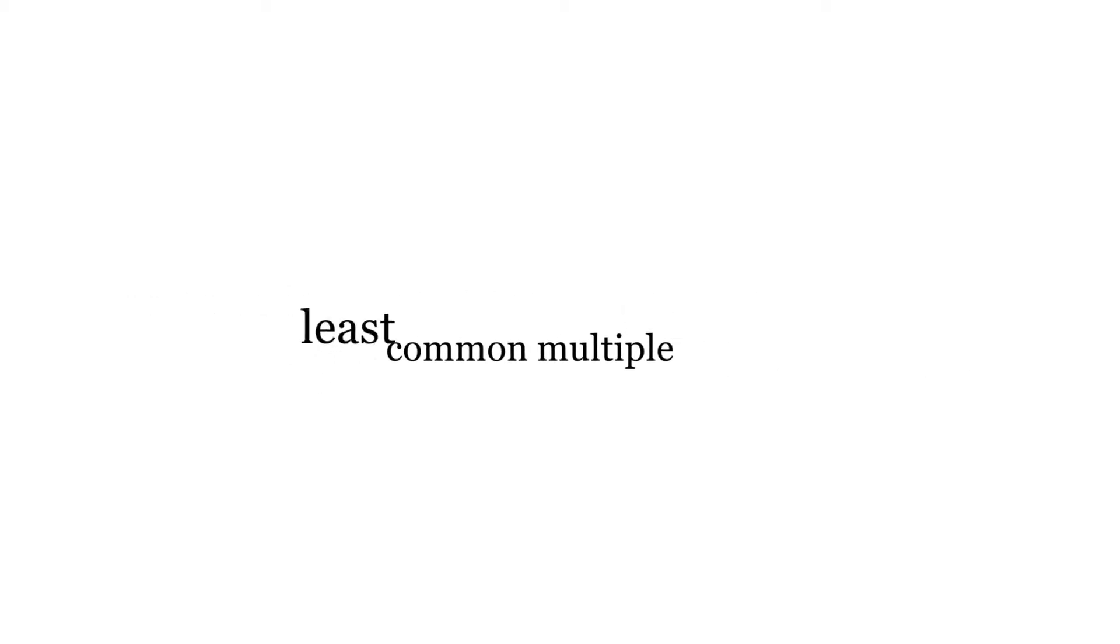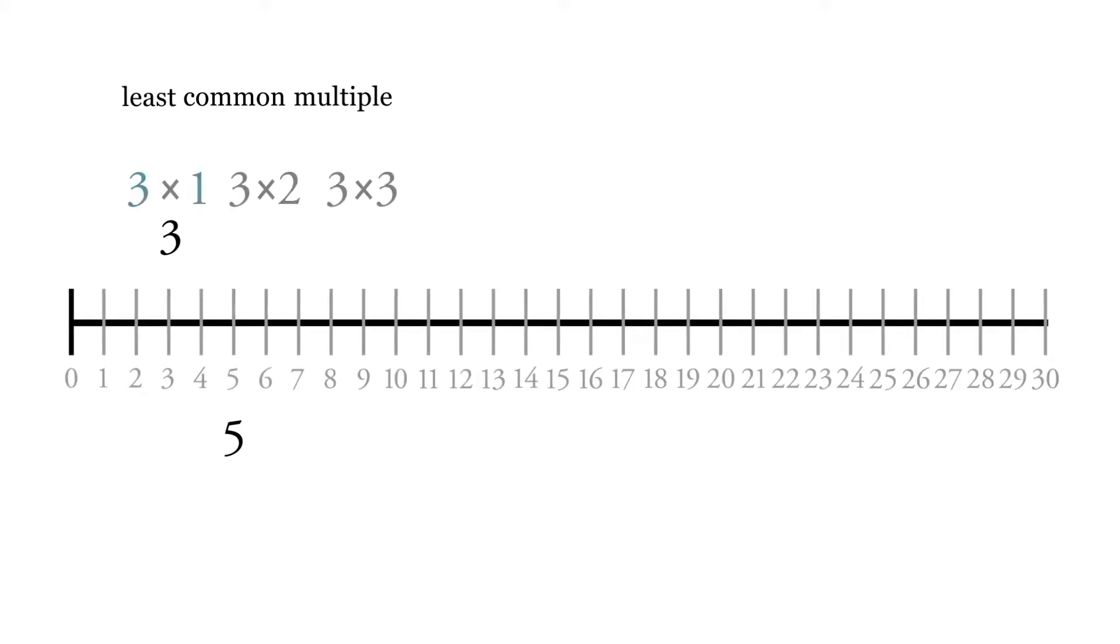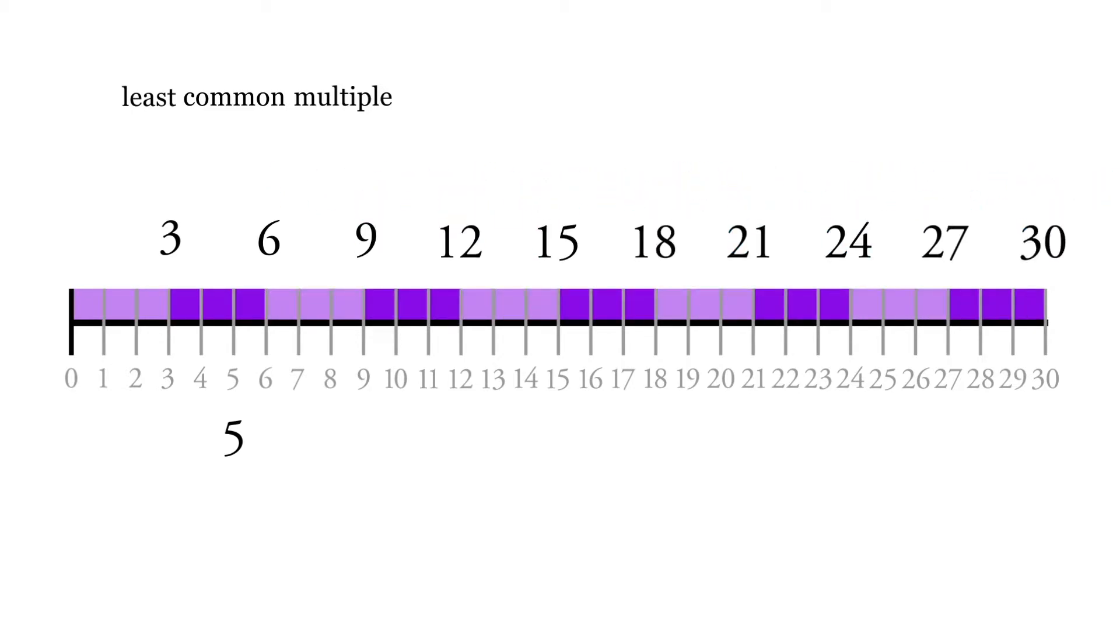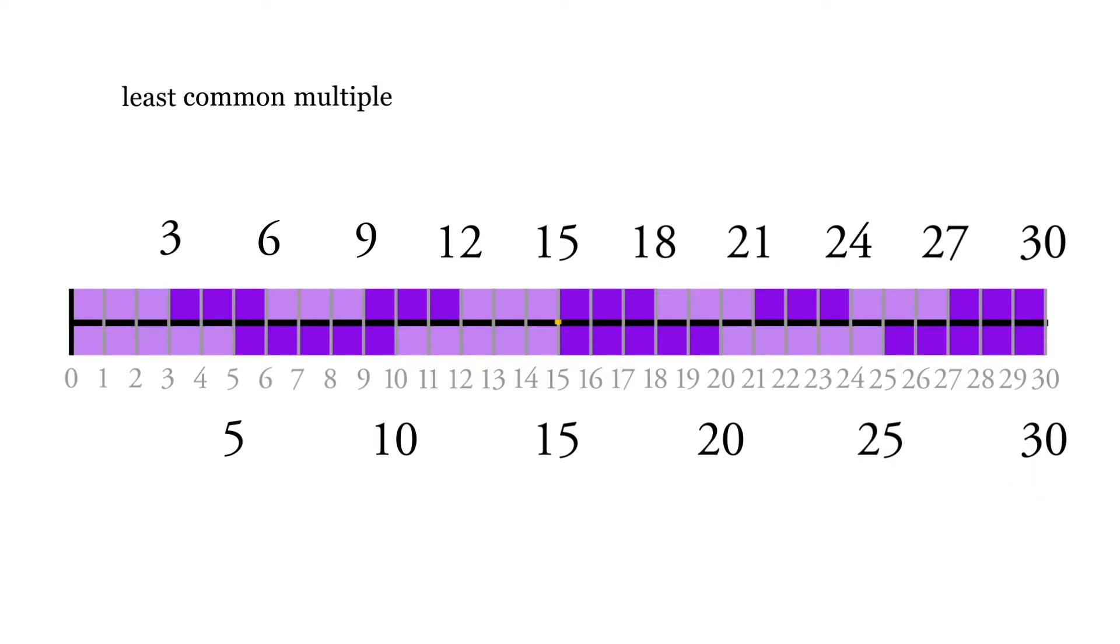So if we're looking at the least common multiple, let's take 3 and 5 and do it on a number line. Multiples of 3: we can skip 3, 6, 9, 12, 15, 18 and so forth. And multiples of 5: we can start at 5, then 5 times 2 is 10, times 3 is 15, 20, 25 and so forth. You see there's this overlap right here. That's our least common multiple. It's the lowest number that's a multiple of both 3 and 5 on the number line. And it works out pretty well because it's 3 times 5.